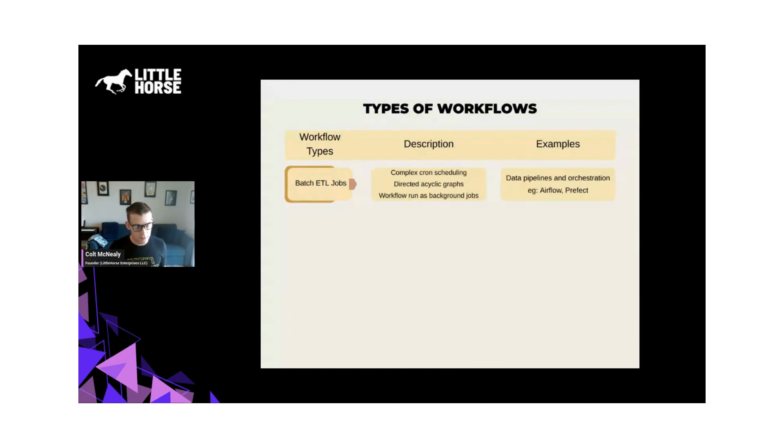And some characteristics of these systems are they have very powerful cron scheduling capabilities, and they tend to represent workflows as a directed acyclic graph, where it's very easy to manage dependencies between tasks. Workflows tend to be slow moving, very static, not necessarily event-driven, not involving actual external users. But these systems get the job done in that space.